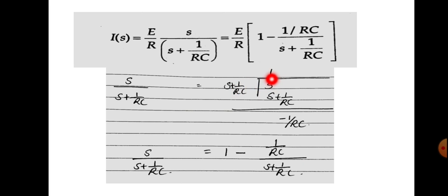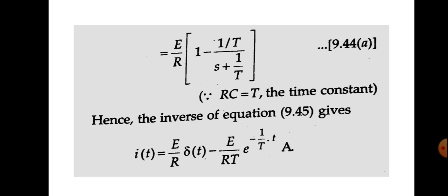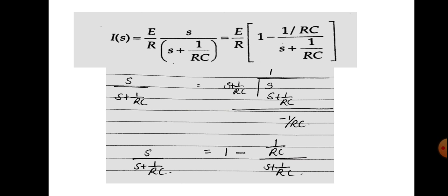Dividing S by (S + 1/(RC)): 1 times (S + 1/(RC)) gives S + 1/(RC), so the remainder is −1/(RC). We can write this expression as 1 − [1/(RC)] / [S + 1/(RC)]. So we can write the I(S) equation as (E/R) times [1 − (1/(RC)) / (S + 1/(RC))]. This is now in the form of a known formula, so we can easily take the inverse Laplace transform to get the response.